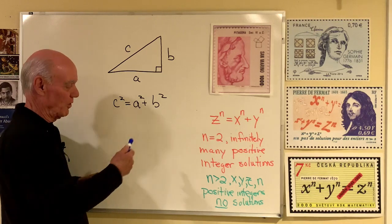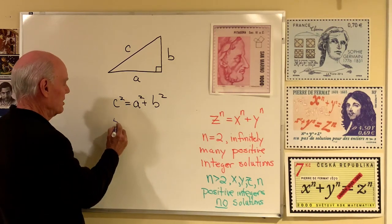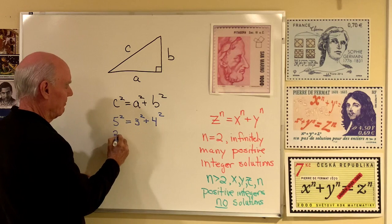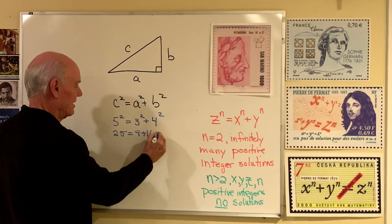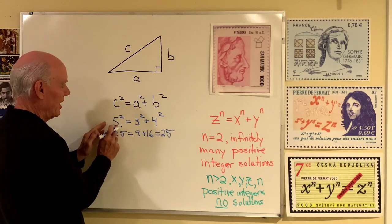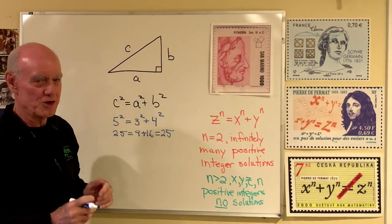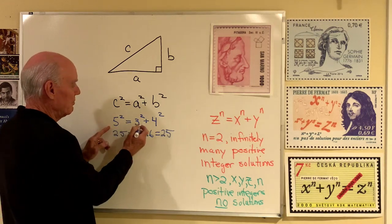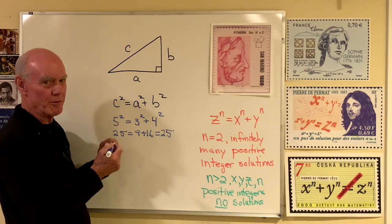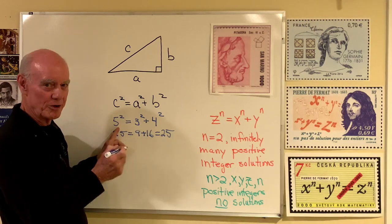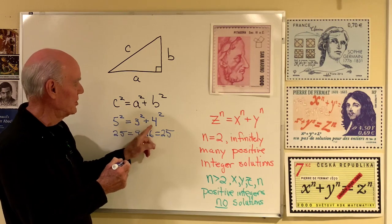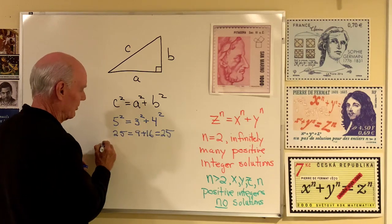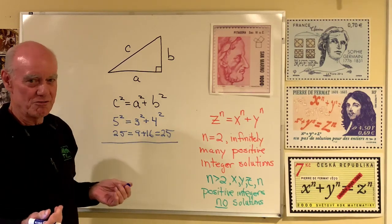So we already worked one of these problems here when we had C was equal to 5, A was equal to 3, and B was equal to 4. So 25 is equal to 9 plus 16, which is 25. So when we have positive integer solutions like this, 3, 4, and 5, then that's called the Pythagorean triple. So if 3, 4, and 5 work here, then any multiple of them will work also. So 6, 8, and 10 will work if I multiply each of them by 2. Or if I multiply each by 3 and get 9, 12, and 15, that will work. So this is one Pythagorean triple right here.